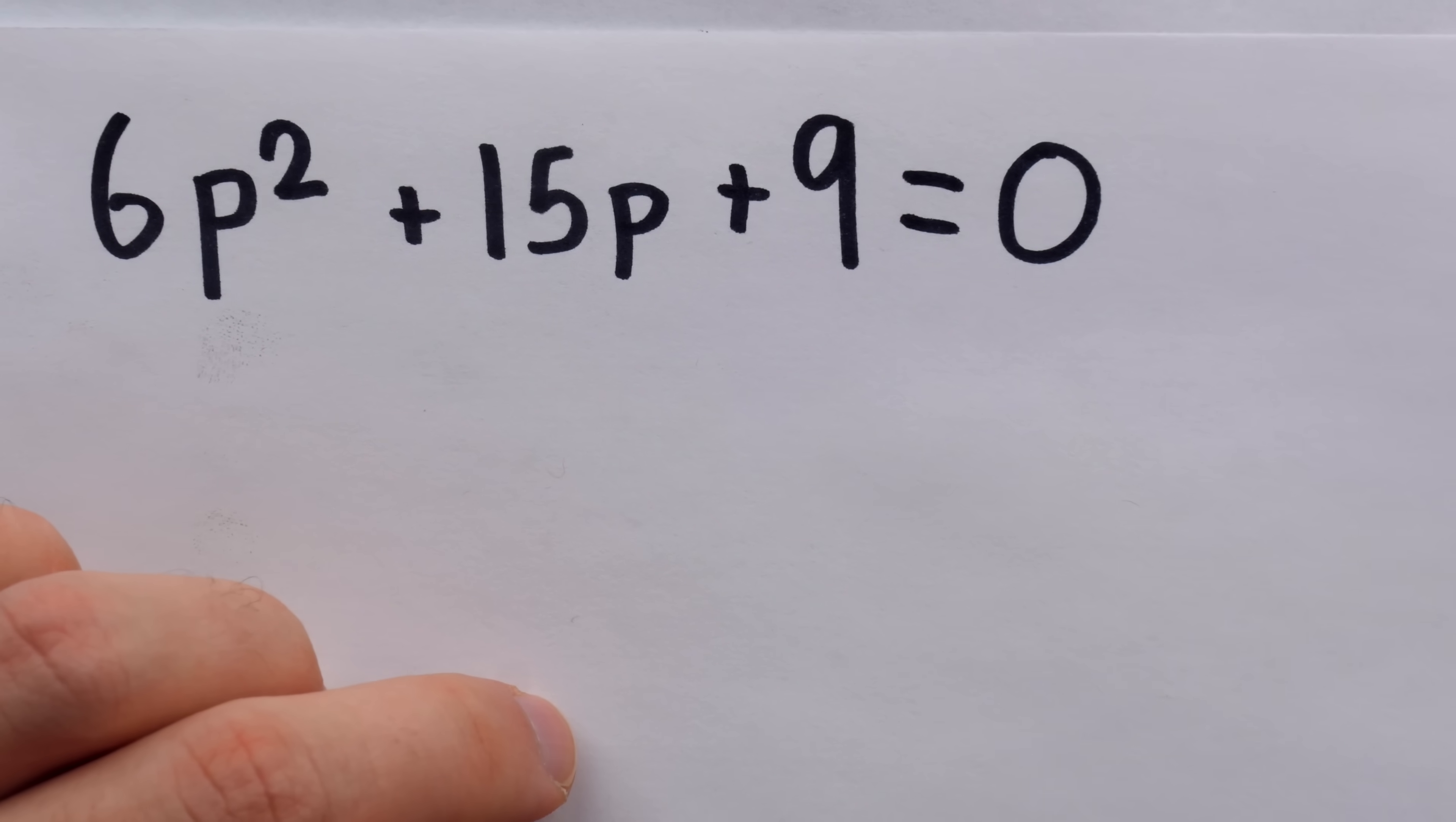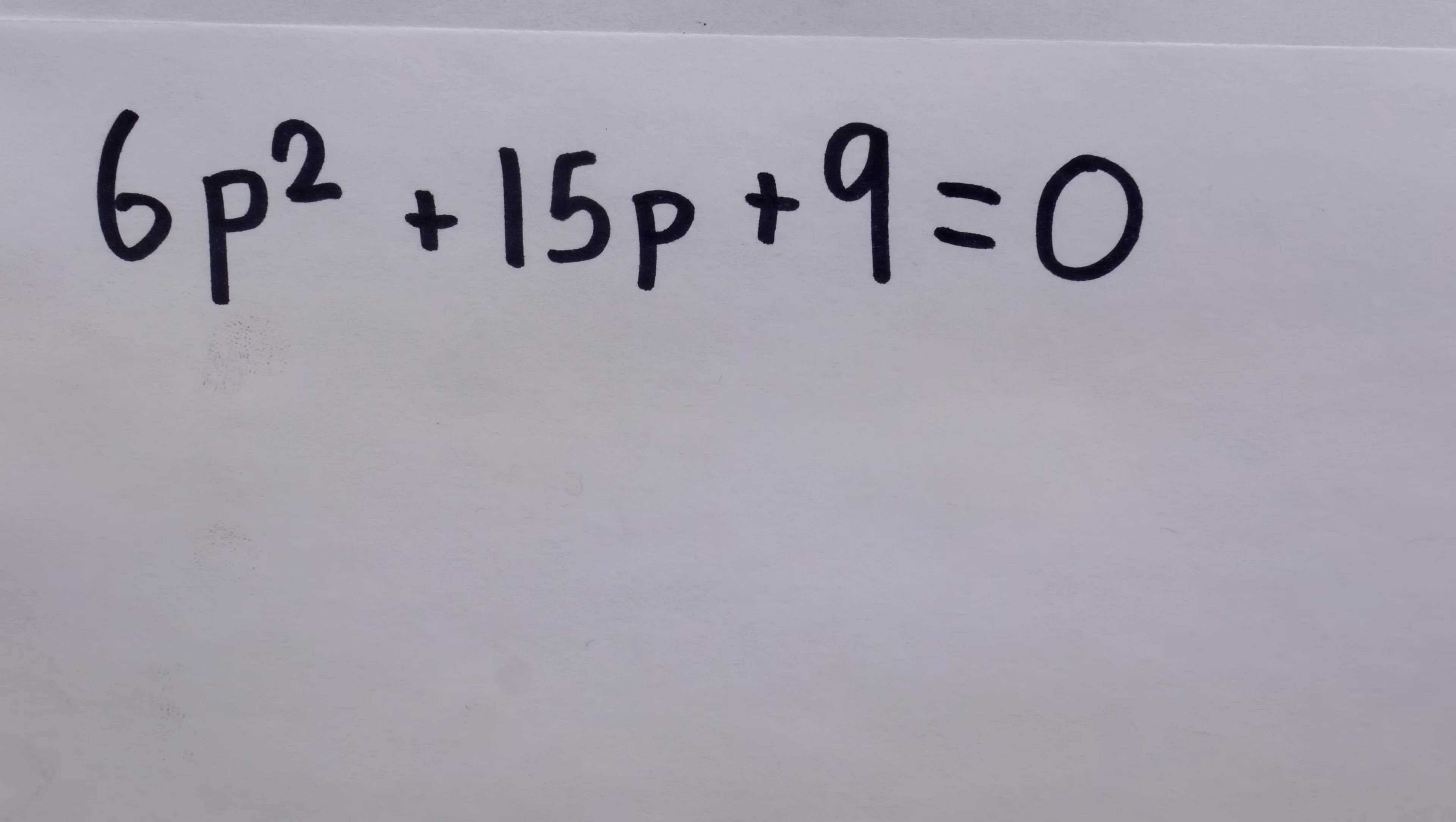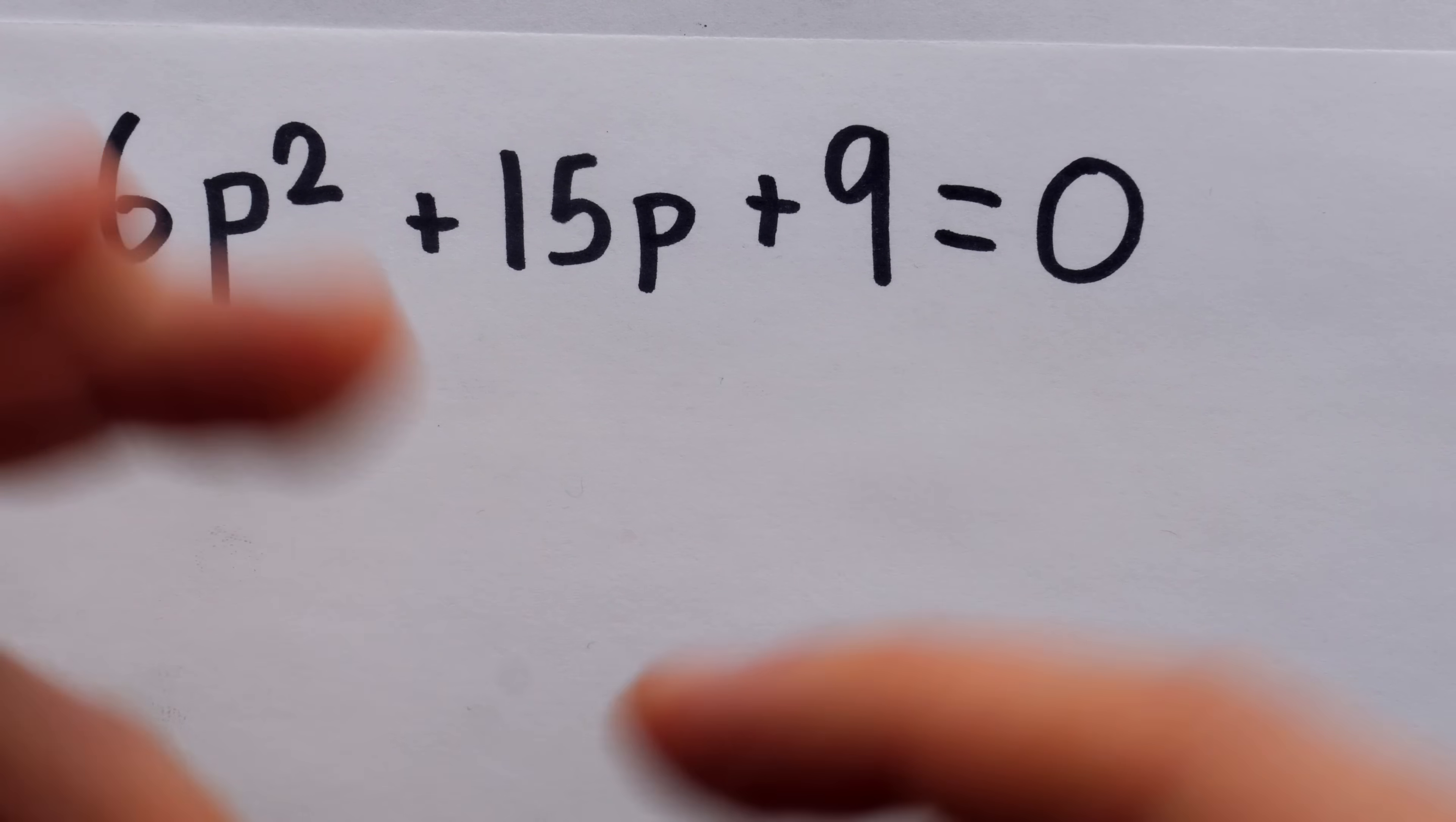Consider this quadratic equation. I'm just using p here instead of x because p stands for pretty cool trick. You can see that the leading coefficient isn't 1, instead it is 6, and that makes the factoring a little bit more difficult.